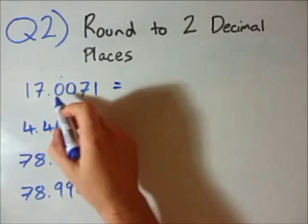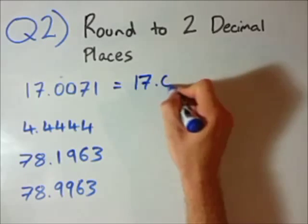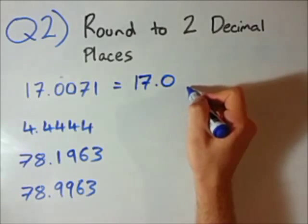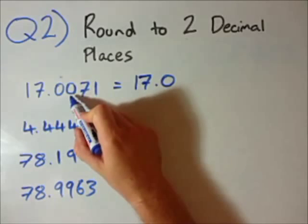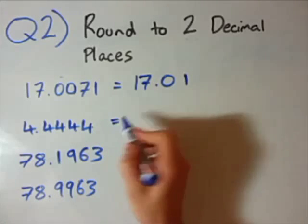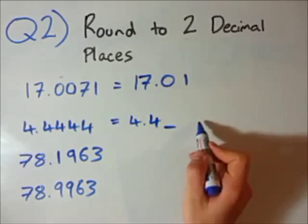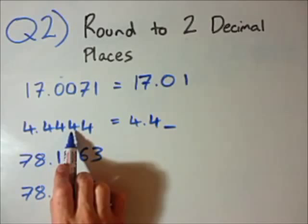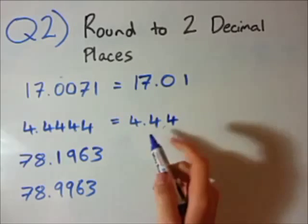Let's go to the first one: 17.0071. I want to round this to two decimal places, so it's going to be 17.0 — this is the last number — but I also need to consider the third number. Well, it's between 5 and 9, so I'm going to be adding 1 to this last number: 0 plus 1 is 1. So the answer is 17.01. Second example: 4.444. The third digit is 4, which is between 0 and 4, so you leave this number the same: 4.44.